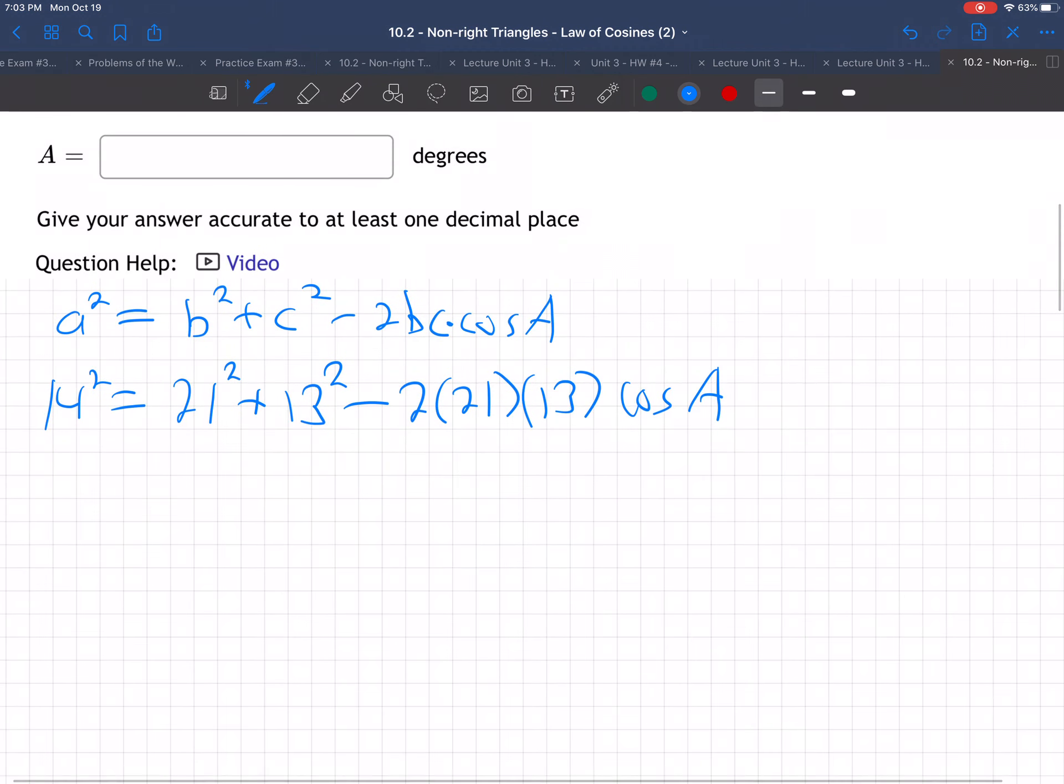2 times 21 times 13 times the cosine of capital A, and we're trying to solve for capital A. So let's use our calculator for all this stuff, 14 squared, 196, equals 21 squared, 441. That's 13 squared, 169 minus 2 times 21 times 13, which is 546 cosine A. Okay, so then add these guys together, 441 and 169, and that's 610. Okay.